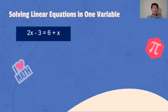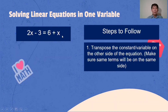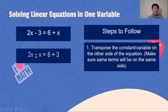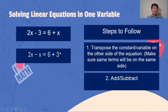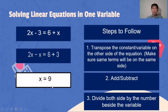Another example: 2x - 3 = 6 + x. When variables appear on both sides, transpose the constant and the variable to group like terms. Transpose negative 3 to the other side — it becomes positive 3. Transpose x to the other side — it becomes negative x. Then add or subtract: 2x minus x is x; and 6 plus 3 is 9. There is no coefficient beside x, so our final answer is x = 9.